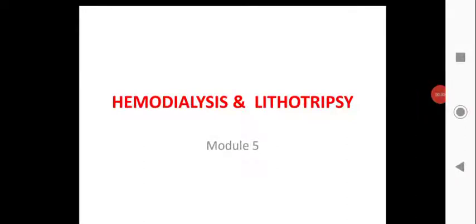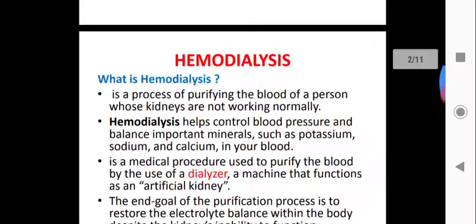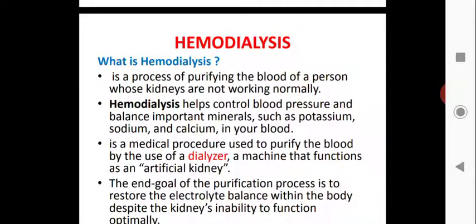Welcome to this class on Module 5: hemodialysis and lithotripsy. If a person's kidney is not working properly, their blood will contain lots of impurities like urea, potassium, and sodium, which should be disposed of through urine. These are produced in the kidney, so if the kidney is not functioning properly, the waste material from the blood will not be excreted through the excretory organs. In this condition, we dialyse a person.